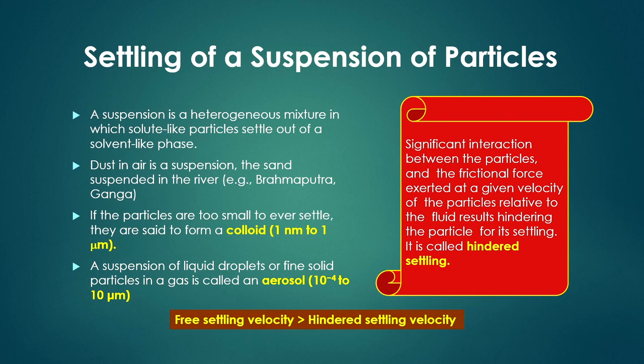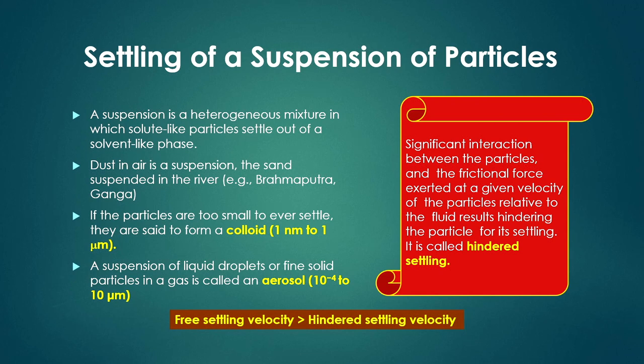There will be significant interaction between particles and frictional forces exerted at a given particle velocity relative to the fluid, which results in hindering the particle's settling — called hindered settling. Free settling velocity, which is the terminal velocity of a single particle, is always greater than hindered settling velocity, which is the velocity of particles settling in the presence of other particles.